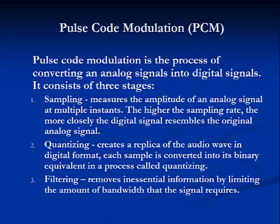The last type of modulation I'd like to talk about is called pulse code modulation, or PCM. Basically, PCM is a digital scheme for transmitting analog data. The signals in PCM are binary — there are only two possible states, represented by logic 1 for high and logic 0 for low. This is true no matter how complex the analog waveform.